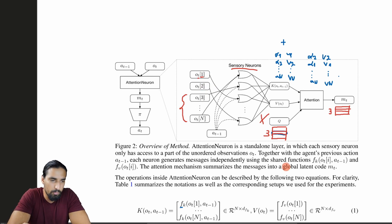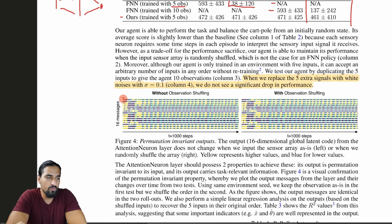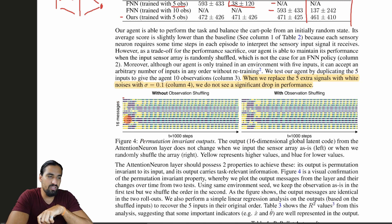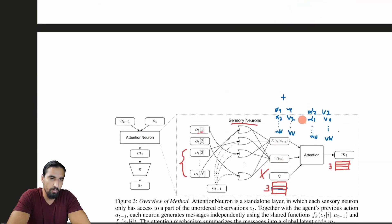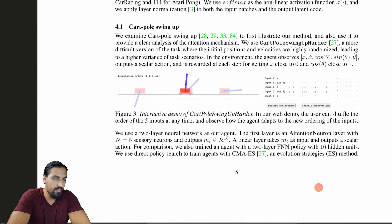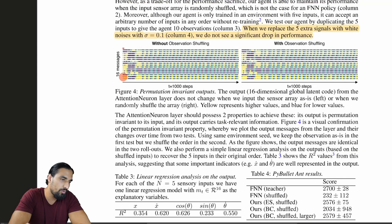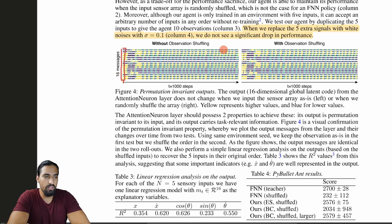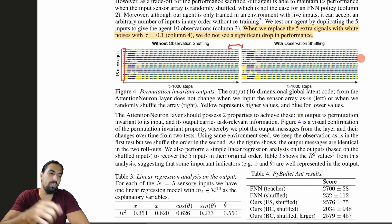On this diagram they visually present how the message — the global representation — remains the same. In the case of CartPole, the message vector is a 16-dimensional vector and they plot it at a single time step. The two plots shown are identical: one without observation shuffling and one with observation shuffling. The message remains the same, which is a visual presentation of the permutation invariance property.